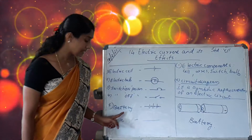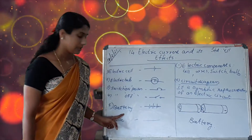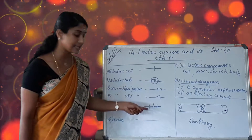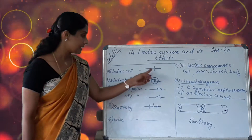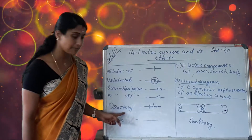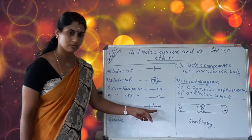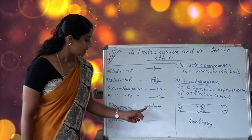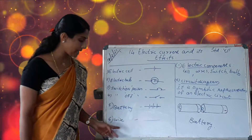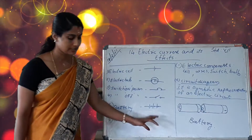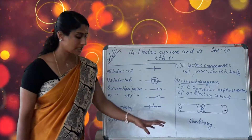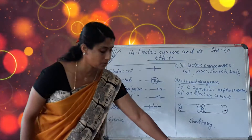Then there is the battery. The electric cell is one single cell with its own symbol, but a battery consists of more than one cell, so it has a different symbol. A wire is represented by a straight line. These symbols can be seen on page 161 of your textbook.